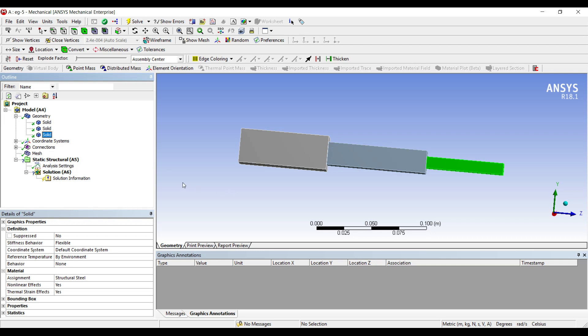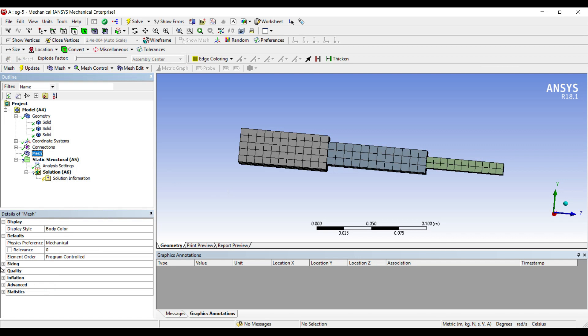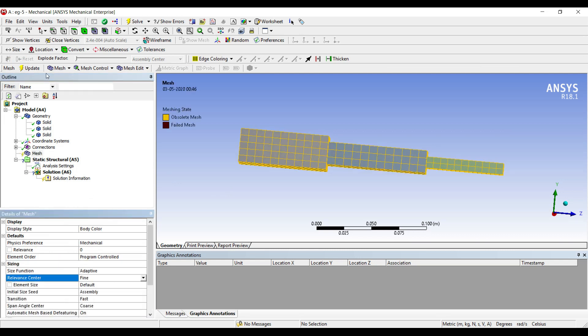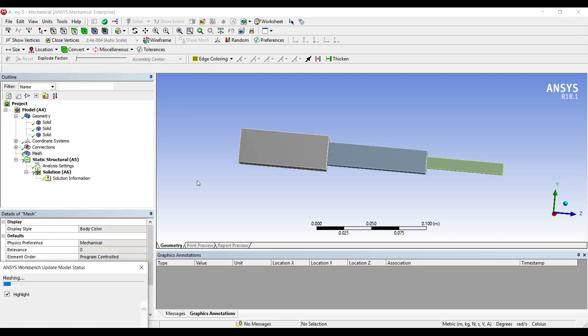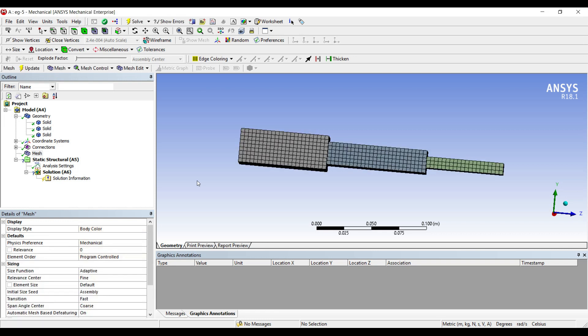I will go to mesh. You can see how the coarse mesh is already done by default. I will just change it to fine. Update. I will go to static structural.